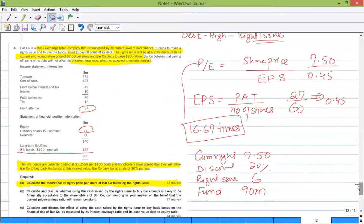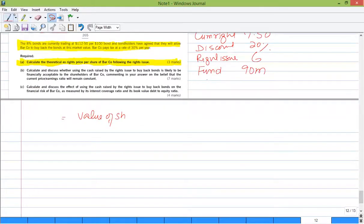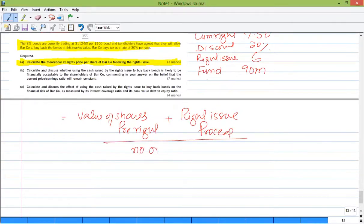6. Requirements first, calculate the ex-right price per share. So for that we have current price is 7.5, discount is 20%, right issue price is 6, and funds are 90 million. So we have discussed a formula: value of shares pre-right plus right issue proceeds, divided by number of shares after right.